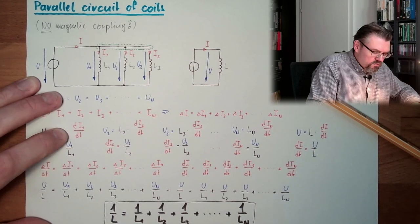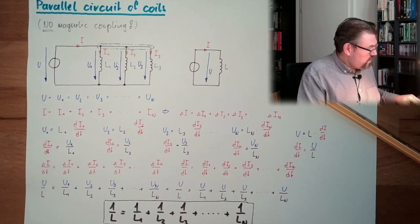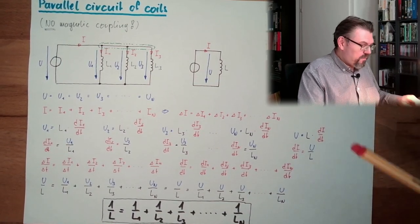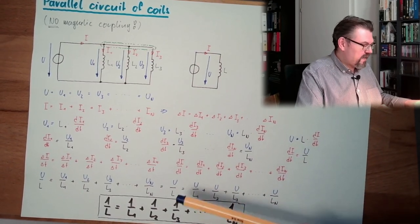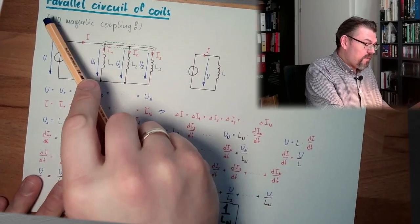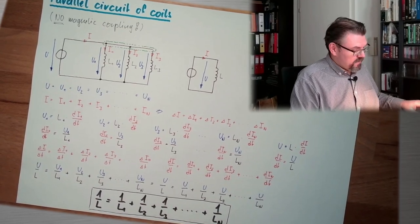As you see, also, here we are behaving exactly like we are behaving with resistors. Resistors, but also this kind, parallel. But, important, no magnetic coupling, okay?